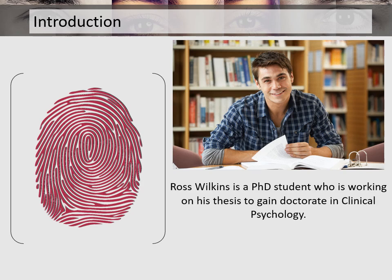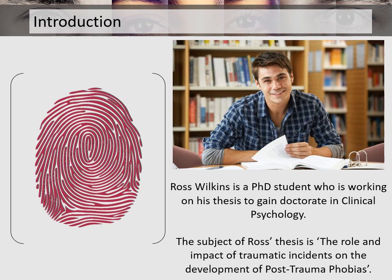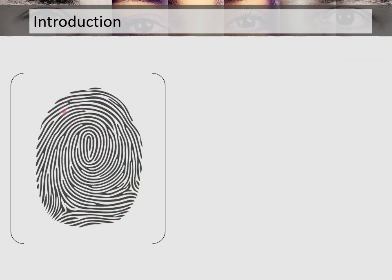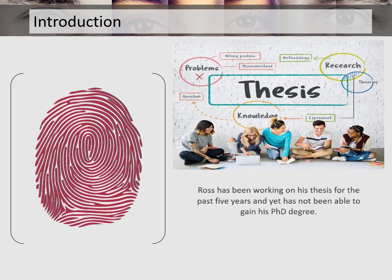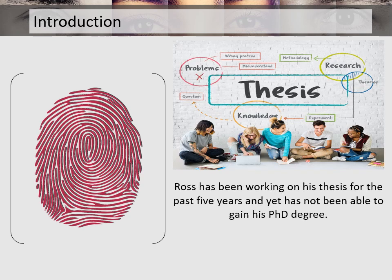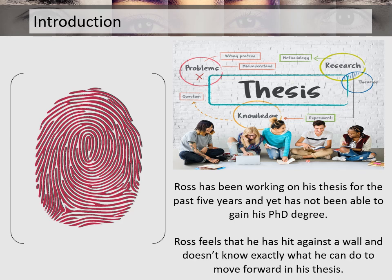Ross Wilkins is a PhD student who is working on his thesis to gain a doctorate in clinical psychology. The subject of Ross's thesis is the role and impact of traumatic incidents on the development of post-trauma phobias. Ross has been working on his thesis for the past five years and yet has not been able to gain his PhD degree. Ross feels that he's hit against a wall and doesn't know exactly what he can do to move forward in his thesis.